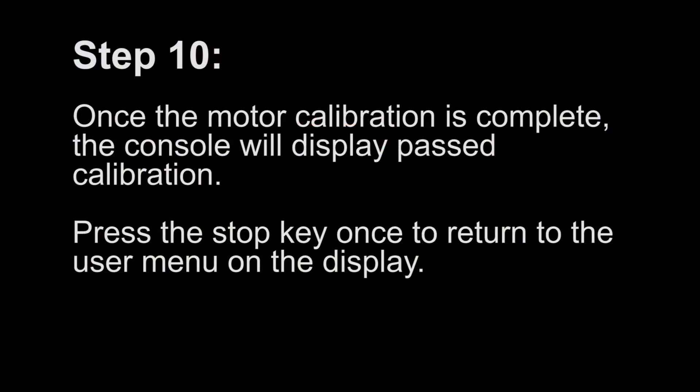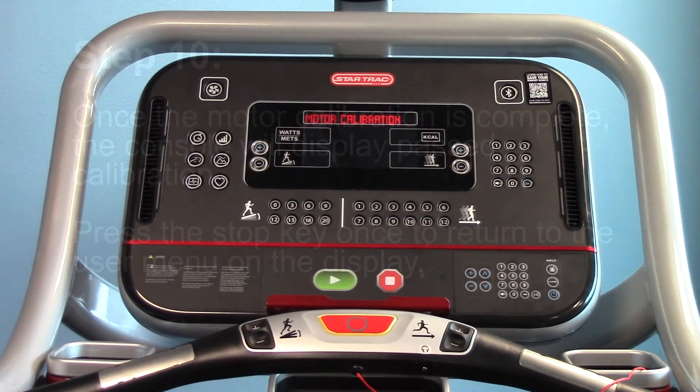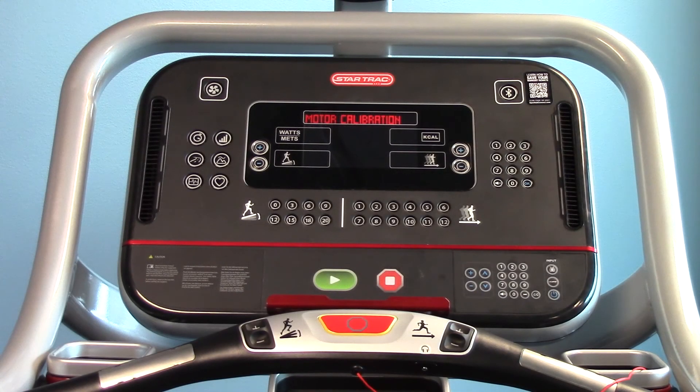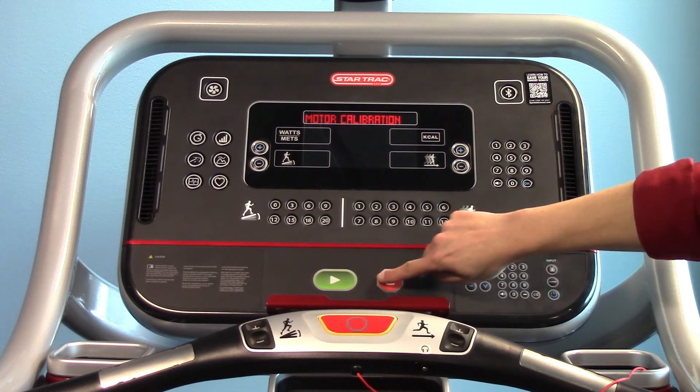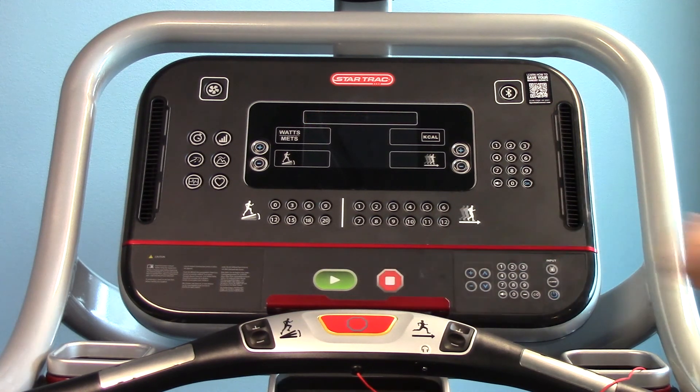Step 10. Once the motor calibration is complete, the console will display past calibration. Press the stop key once to return to the user menu on the display.